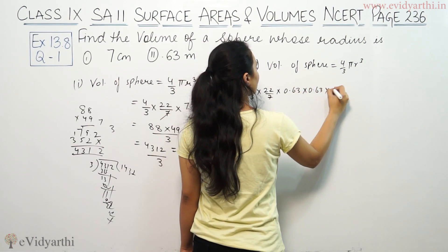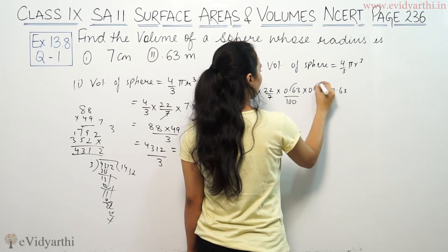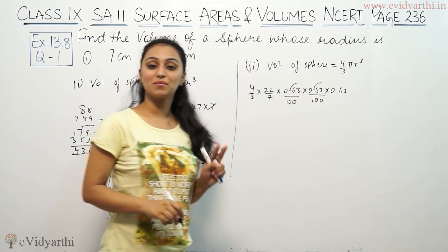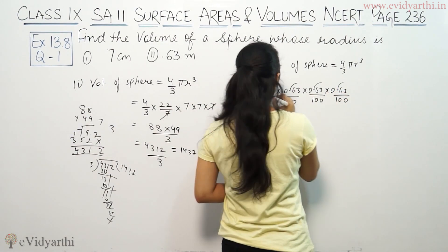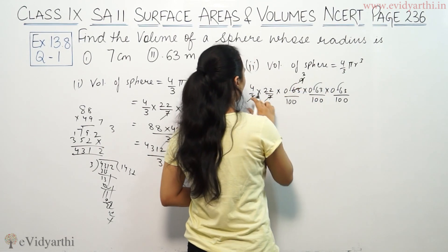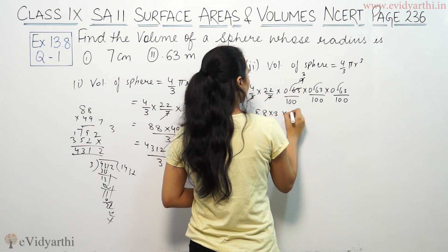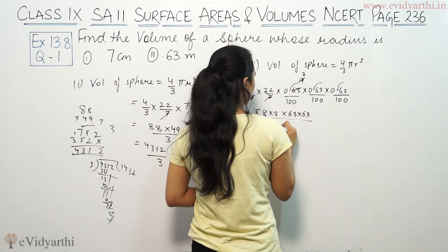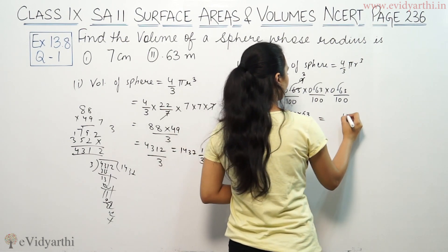We compute 0.63 into 0.63 into 0.63. To remove the decimals, since there are 2 decimal places each, we multiply by 100 for each — giving us 63 cubed divided by 100 cubed, i.e., one million. So the expression becomes 88 into 3 into 63 into 63 into 63, divided by the appropriate powers of 100.